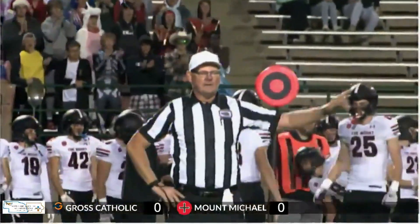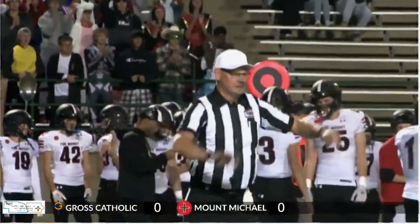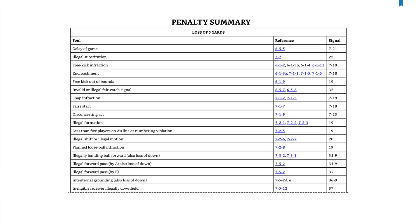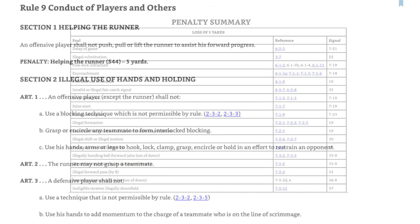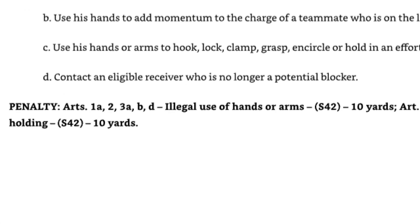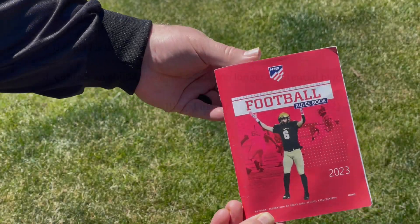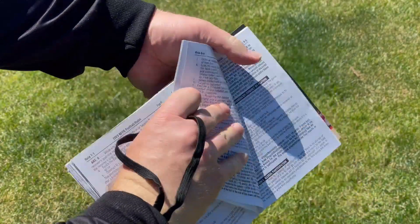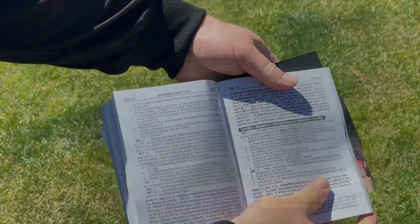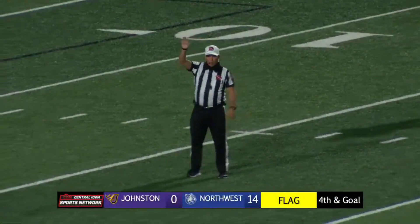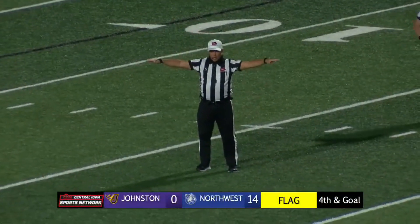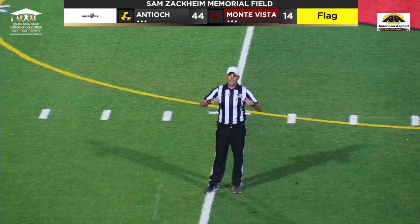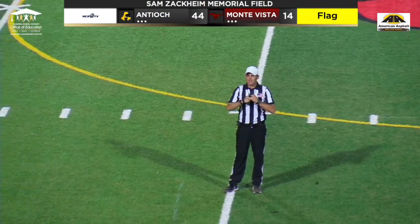To learn all those pesky penalty signals, I've found it easier to use the penalty summary at the end of the rulebook than to use the penalty enforcement information located at the end of rule sections. You're likely to get a paper cut from flipping back and forth to those pages. I've also found that making flashcards from the penalty summary is even more helpful. So consider this your video flashcards for penalty signals.